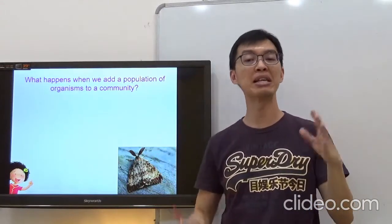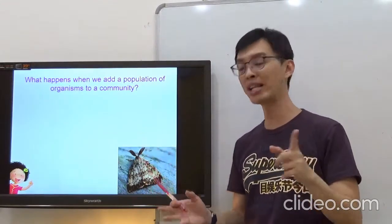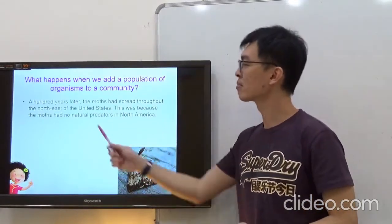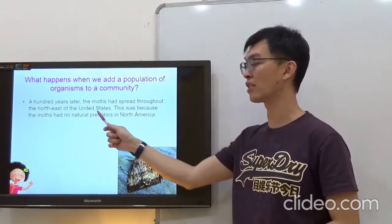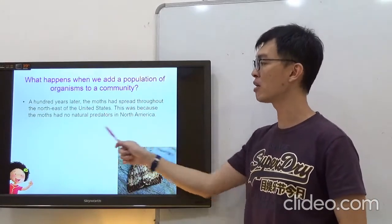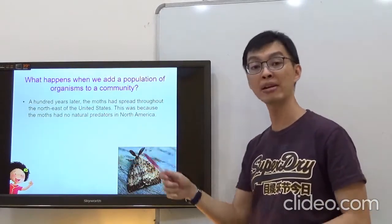Now, the moment it escaped, it spells doom. Why did I say that? Take a look. A hundred years later, the moth had spread throughout the northeast of the United States. This was because the moth has no natural predators in North America.